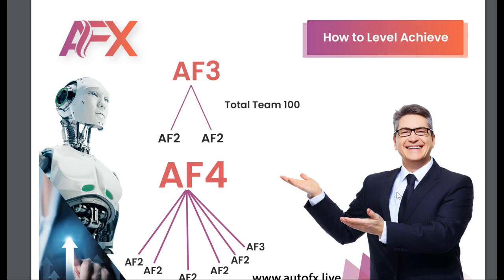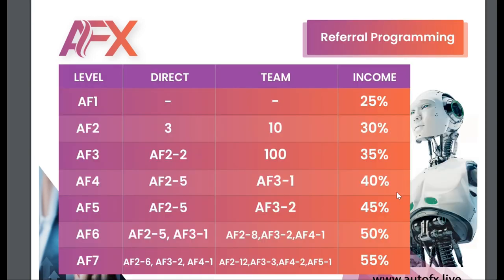To get rank one (AF1), all you need to do is activate your account — you automatically become an AF1 or rank one member. As a rank one member, you earn 25% from the activation fee of anyone you refer directly into the business. Everybody you refer pays an $80 activation fee, and you get 25% of that, which is $20.